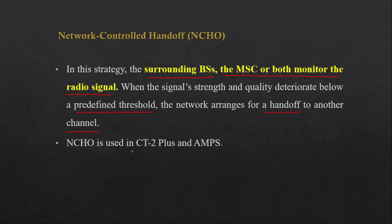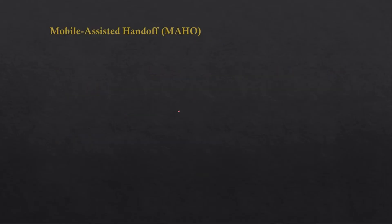Examples of NCHO systems are CT2 Plus and AMPS. The third type of handoff is Mobile Assisted Handoff (MAHO), which is very popular.